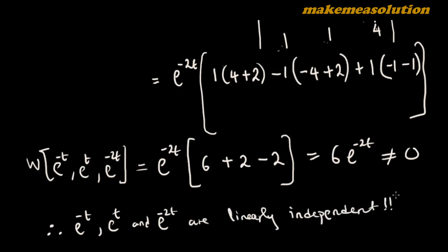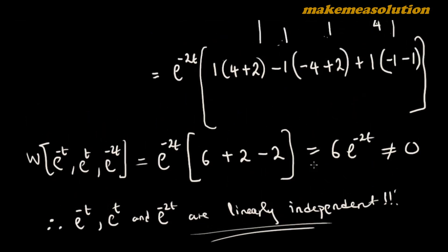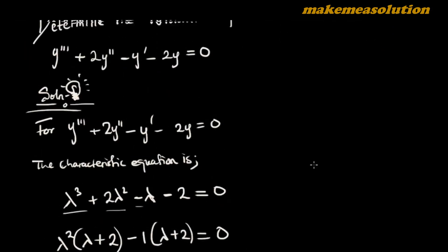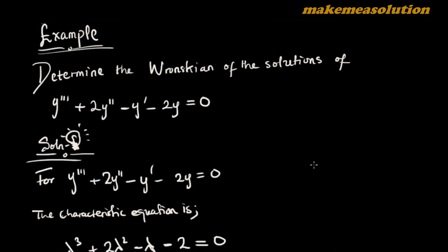This is how we evaluate the Wronskian in the context of differential equations. When you obtain the solutions, you test them without the arbitrary constants and compute the Wronskian value, which tells you whether the solutions are linearly dependent or linearly independent. That's it for this problem — like, share, and subscribe to stay updated.